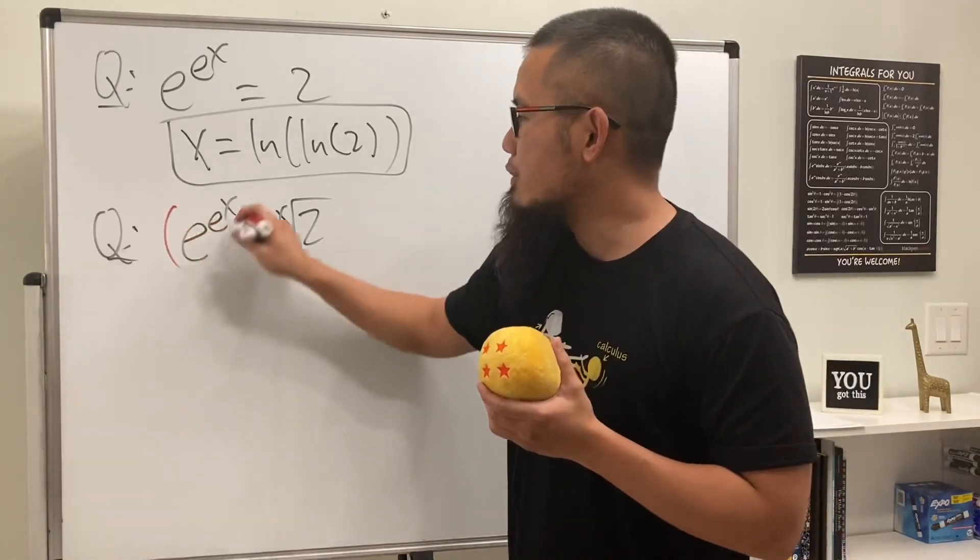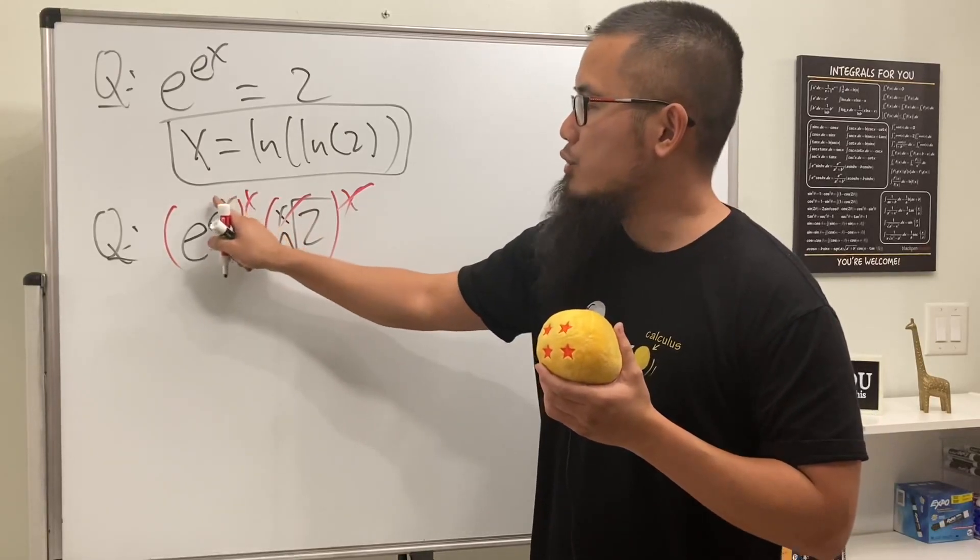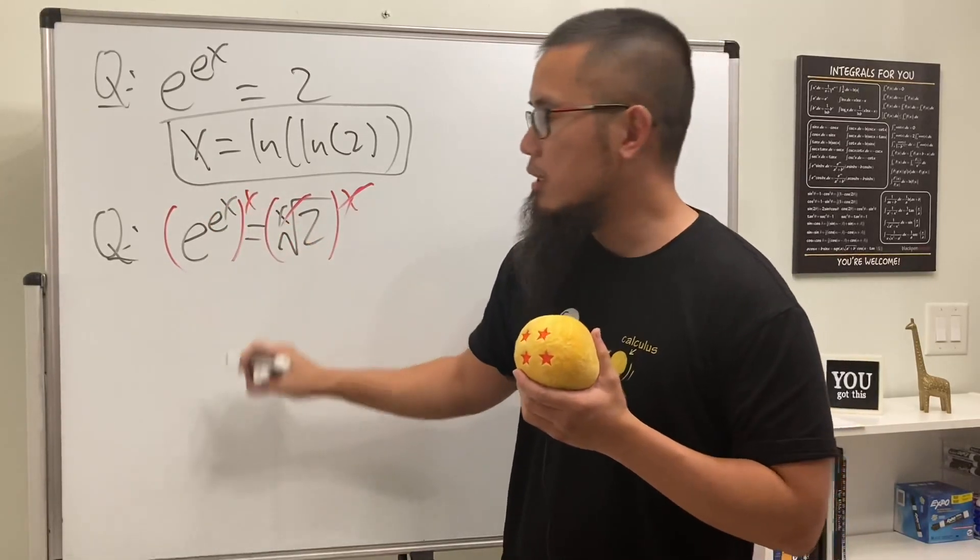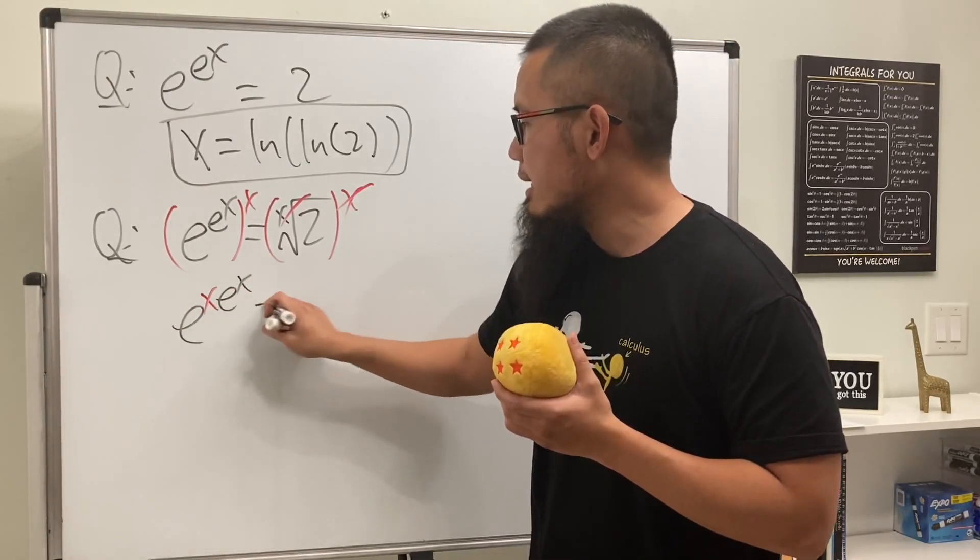Okay, this is how we can do it. We can actually just raise both sides to the x power first, and you see that this and that will cancel. And for this guy right here, we can just multiply this power with that power together. So we're looking at e to the x times e to the x power like this, and this is equal to 2.